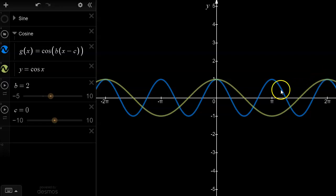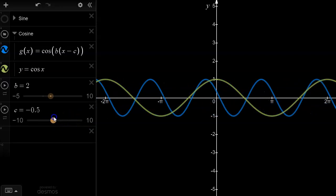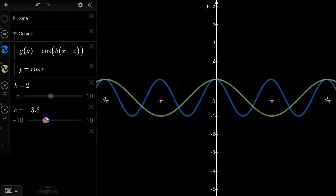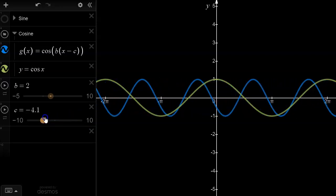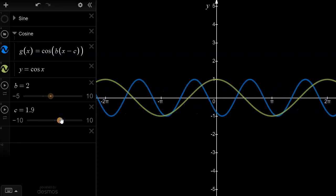And we also see that the c value represents the horizontal translation or phase shift of the curve, either to the left when c is negative or to the right when c is positive.